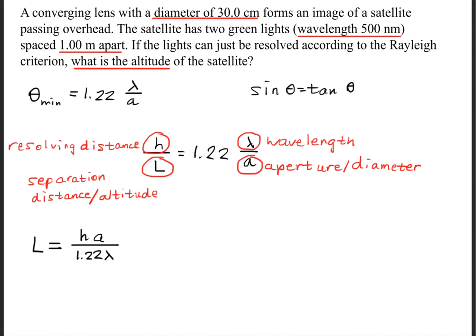Or in this case, the altitude of the satellite, we'll get that L is equal to h times a divided by 1.22 times lambda.